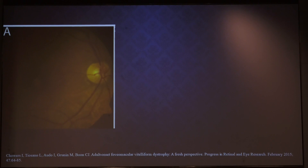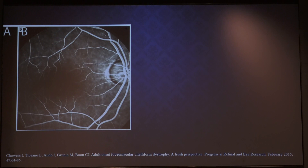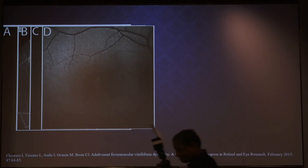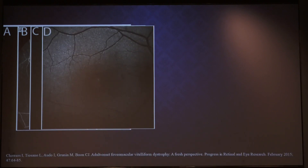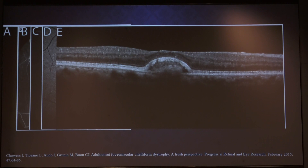Features include about half to one-third disc diameter sub-retinal yellowish lesion seen around the macula. In fluorescence angiography, early stage shows hyperfluorescence with surrounding hyperfluorescence, and in the late stage leakage and staining is seen. Fundus autofluorescence shows central hyper-autofluorescence surrounded by hypo-autofluorescence, and OCT shows homogeneous sub-retinal hyper-reflective material below the RPE.